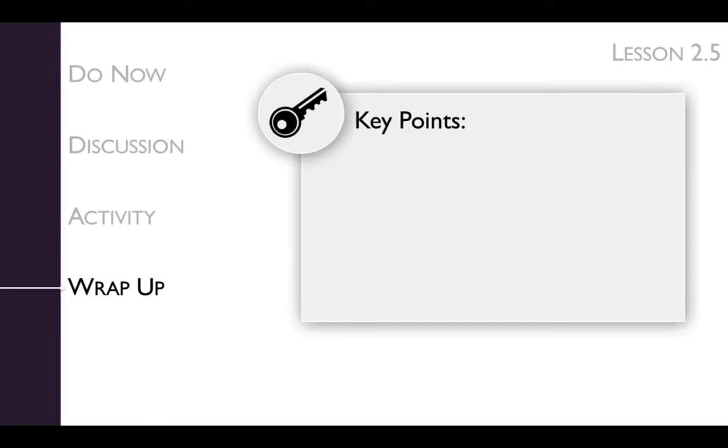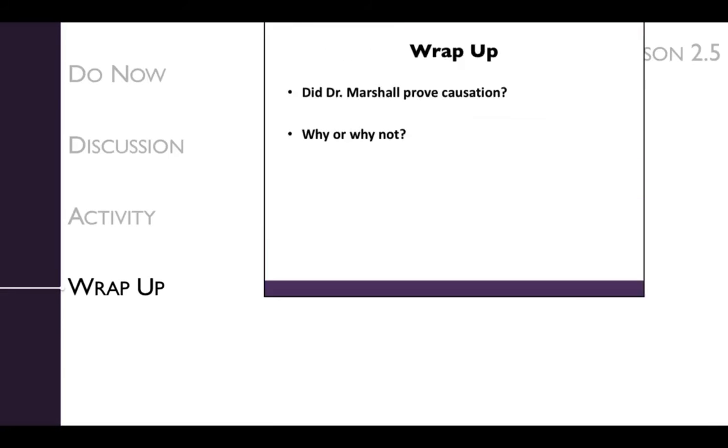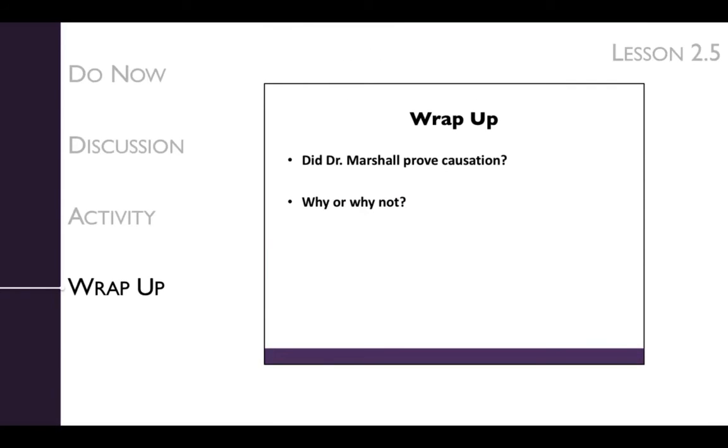The key points of the lesson's wrap-up are that Koch's postulates are often difficult or impossible to fulfill. This leaves the medical community with a decision. Accept or reject a model with substantial but not conclusive evidence. We'll get there by reflecting on the results of the case study, emphasizing the limitations of making conclusions when it's not possible to prove causation by fulfilling all of Koch's postulates.